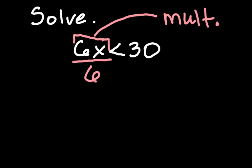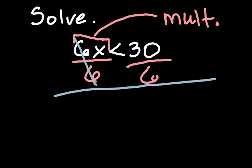So divide the left side by 6. Divide the right side by 6. The 6's cancel out. 30 divided by 6. Let's grab your calculator. One step left. So x is less than 5.